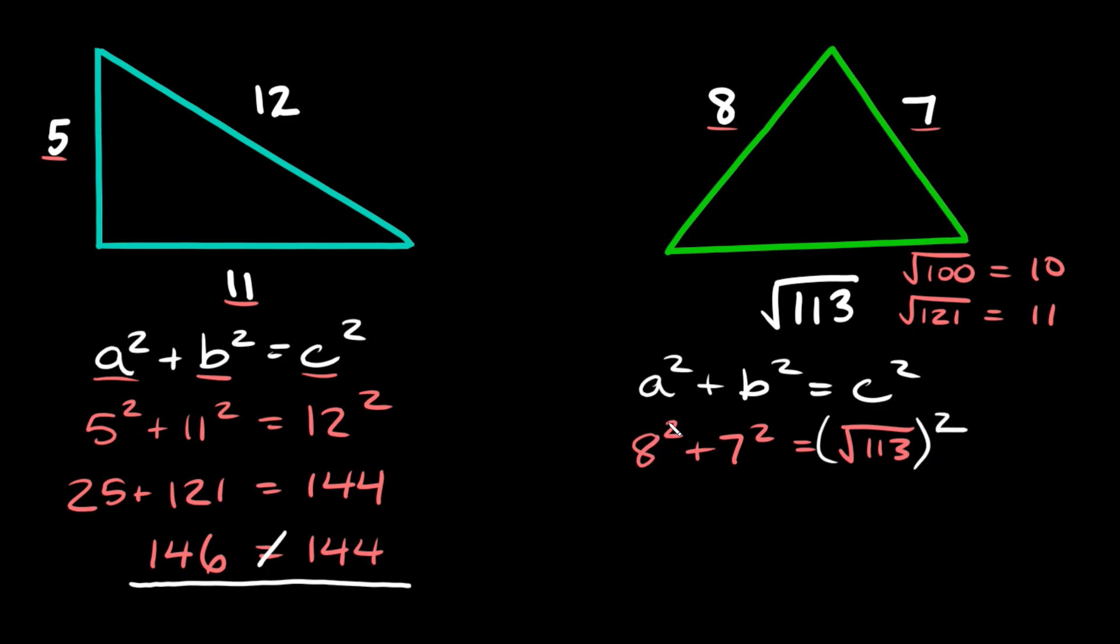So here, 8² is 64. 7² is 49 and that's equal to (√113)². Now whenever you square a square root, they just cancel each other out and all you're left with is the number that's inside of the square root, inside the radical. So 113. We're going to put just 113 right there.